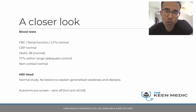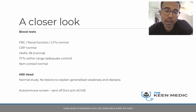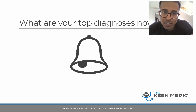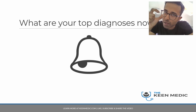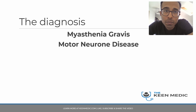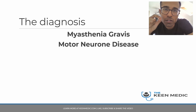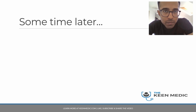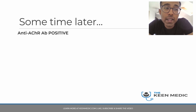So you send off the autoimmune screen, which inevitably takes several days if not a couple of weeks to come back. You also send off an anti-AChR - anti-acetylcholine receptor antibody. So what are your top diagnoses now? We've looked at a lot of different things. There is nothing sensory, nothing lateralizing, nothing really endocrine going on here. The top differentials now should be myasthenia or motor neurone disease - something neurological is going on. Sometime later, the anti-acetylcholine receptor antibody comes back positive. Now you have the diagnosis - the patient has got myasthenia.